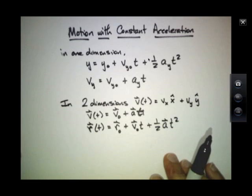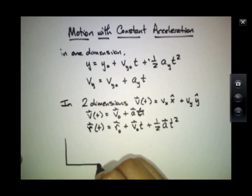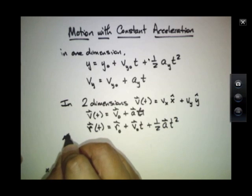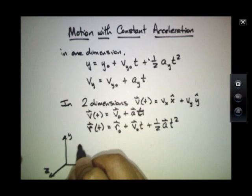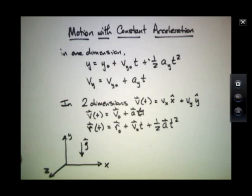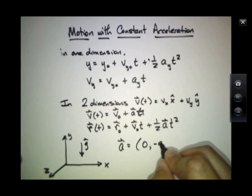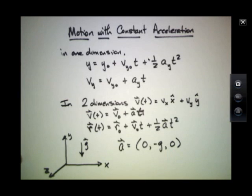We want to consider a case where the acceleration is constant. In particular, we're interested in motion in three dimensions where gravity points straight down. So the acceleration vector is zero in the x-direction, minus g in the y-direction, and zero in the z-direction. If z is pointing out of the page, x is along the horizontal, and y is on the vertical.